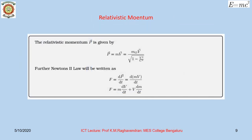We finally note that the relativistic momentum p is defined as mass times velocity v, where m = m0/√(1 − v²/c²). Further, Newton's second law will now be written as F = dp/dt = d(mv)/dt. Since both m and v are functions of time, we have F = m·(dv/dt) + v·(dm/dt).